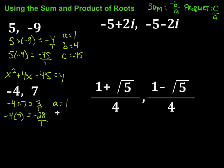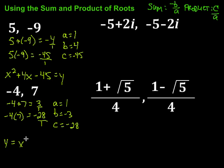In this case A is 1. B is the numerator from our sum — remember it's negative B, so we take the opposite of what's there, giving us negative 3. Then C equals negative 28. Filling those into the general form gives us Y equals X squared minus 3X minus 28.